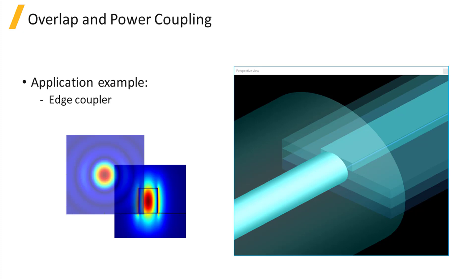The overlap and power coupling calculations can be used in applications such as the edge coupler. We are interested in knowing how much light is coupled from one waveguide to another.